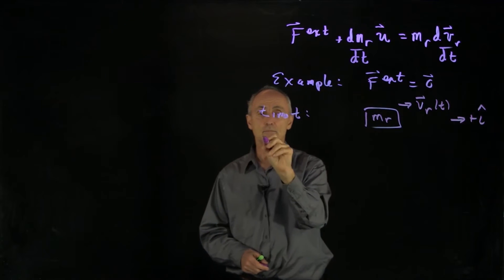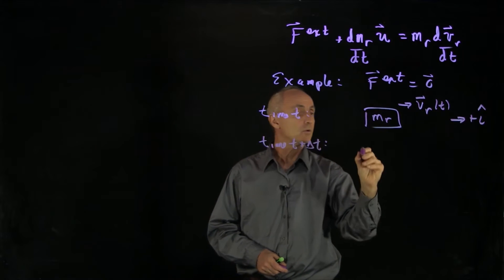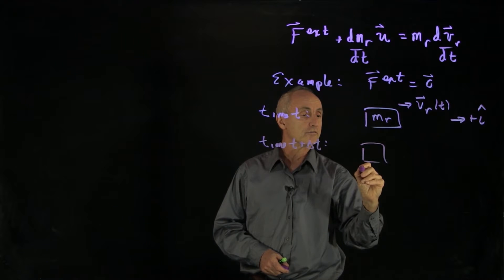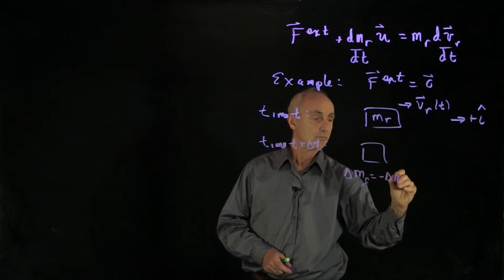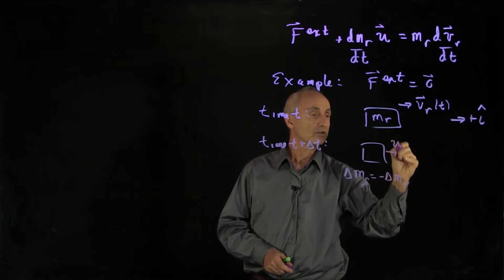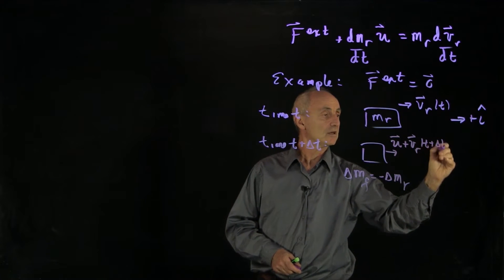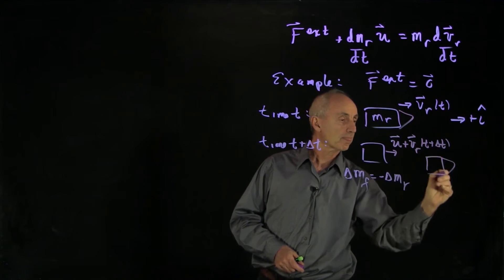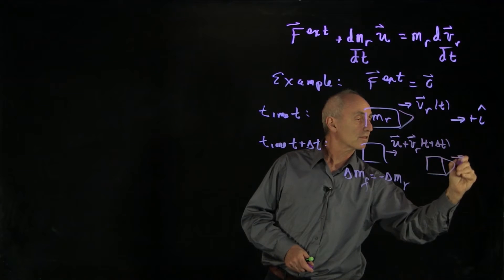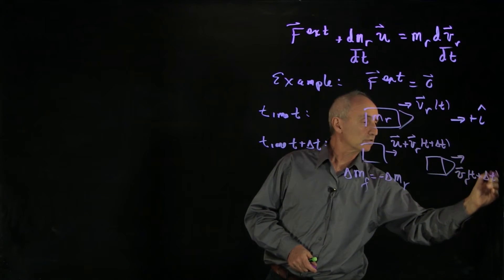And then at time t plus delta t, we have our fuel, delta m_fuel, which equals minus delta m_rocket, moving with relative velocity u plus v_r(t + Δt). And our rocket itself is moving with v_r(t + Δt).